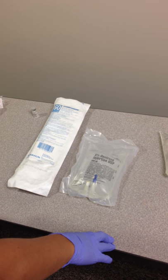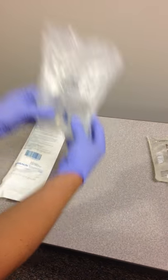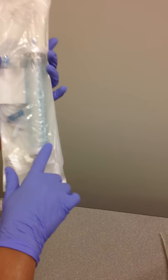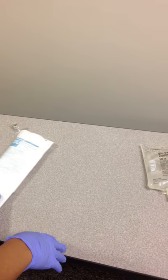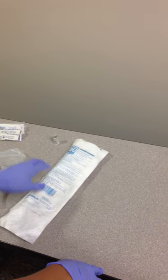Give amiodarone with a burette set. What we're going to need is a bag of D5W, a burette set, 60 drop burette set, and then we'll need the amiodarone and a syringe to give it.